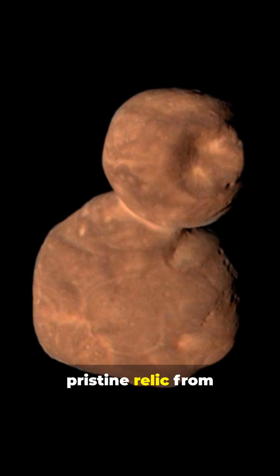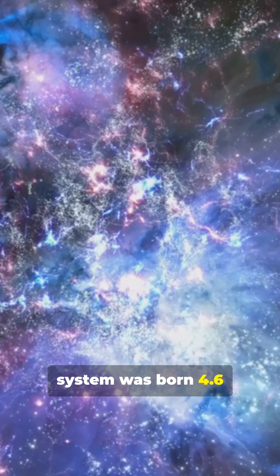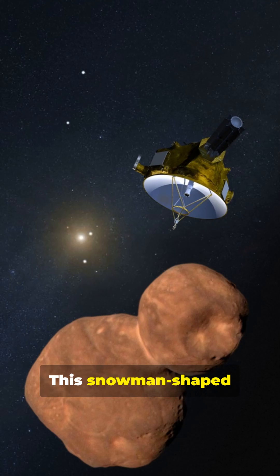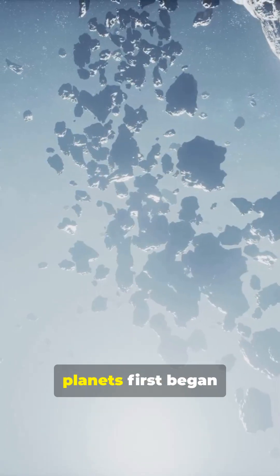New Horizons pushed deeper into the Kuiper Belt, reaching Arrokoth, a pristine relic from when our solar system was born 4.6 billion years ago. This snowman-shaped object revealed how planets first began to form.